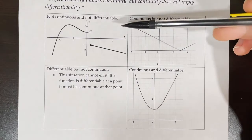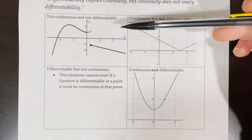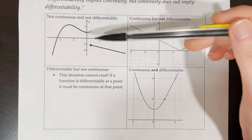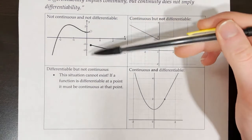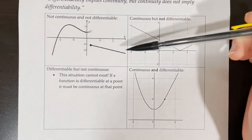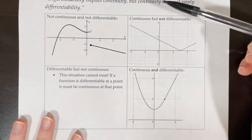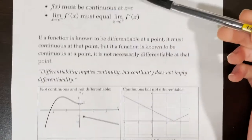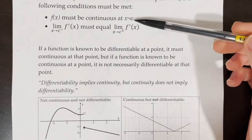This first graph is neither continuous nor differentiable at this point. It's not continuous because we have a jump discontinuity, and we know that if a function is not continuous, it's not differentiable.